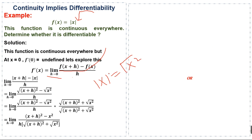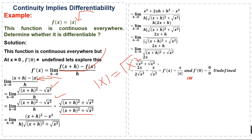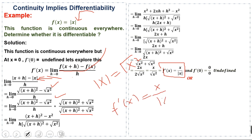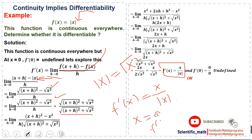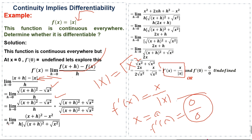Applying the definition and simplifying the expression by multiplying and dividing appropriately, we get the derivative of f(x) equal to x / |x|. If we substitute x = 0, the derivative becomes 0/0, which is an undefined form.